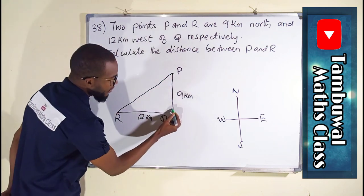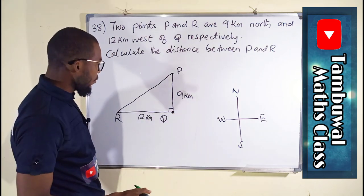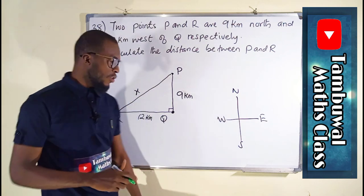If you look at this shape, it's a right angle triangle, which we can find this side, which we can call X, using Pythagoras theorem.